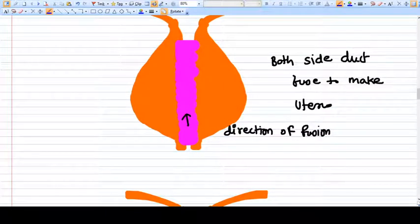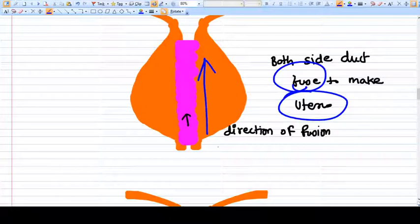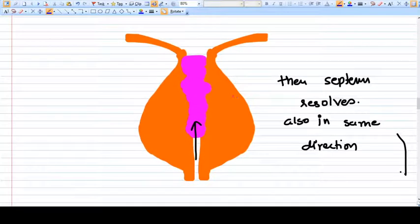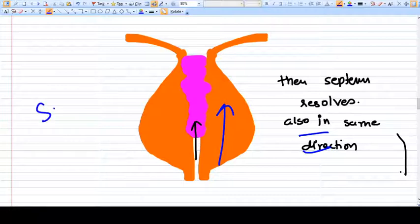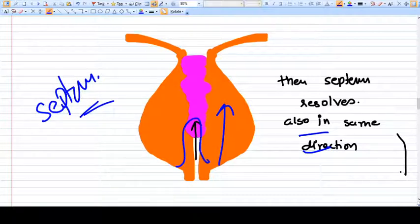They will fuse to make the uterus, and the direction of fusion is from below upwards. And then the cavity will be formed inside that, and the direction of cavity formation will also be from below to upwards. So what happens is, if this process of fusion and cavity formation is not complete, then some part of this septum will be remaining and this will become the uterine septum. And the septum will always be on the upper part.